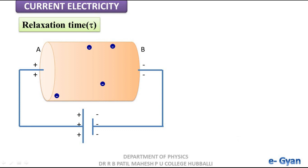Next, relaxation time. As we all know, the free electrons in the conductor undergo collisions, and these electrons will undergo n number of collisions. They consume some time between two successive collisions. The time between two successive collisions for n number of collisions is not the same — for some it takes more time, for some it takes less time. Therefore the average time between two successive collisions is called relaxation time.